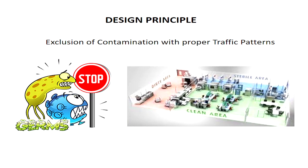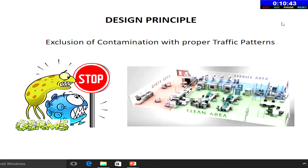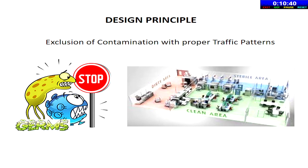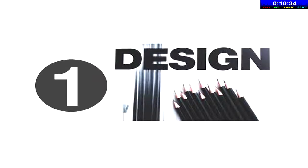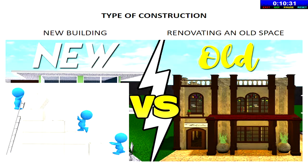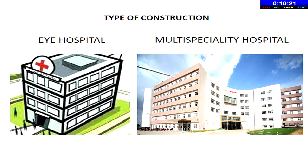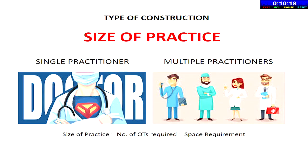There are many different ways of designing an OT complex, but the essential principles that should be followed in architectural layout and building quality are exclusion of contamination with proper traffic patterns and separation of clean areas from contaminated areas. The first and foremost thing to consider is the type of construction — are we going to construct a new building or renovate an existing structure? Is it going to be an exclusively eye hospital or part of a multi-speciality hospital? Is the facility meant for a single surgeon or multiple surgeons? This directly correlates with the number of OTs required, which determines the space requirement.